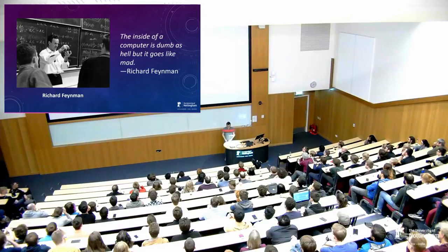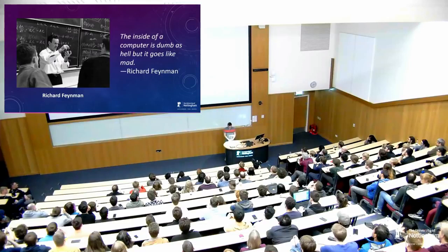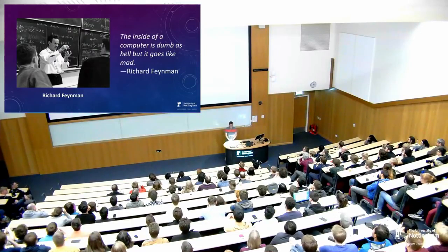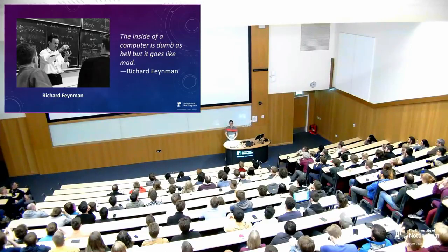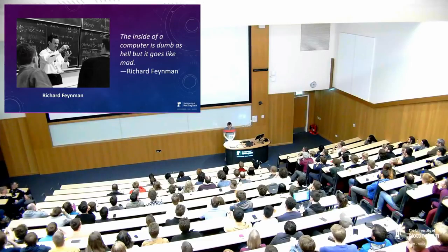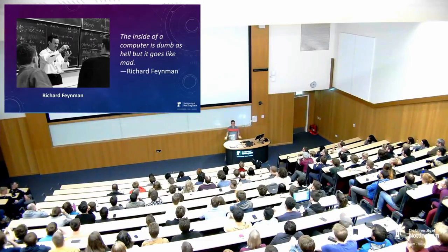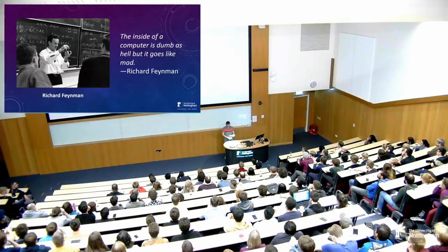I highly recommend looking into his lectures — they're entertaining but also quite informative. However, I don't think his description of a computer brings about what I consider very important, which is this notion of an abstract machine. Generally, when you're trying to look for a common abstraction, you look at a bunch of examples and see what's common among them. I'd like to talk about two of them in particular.